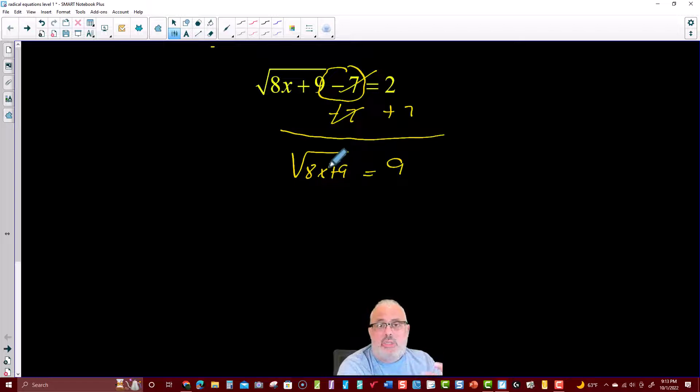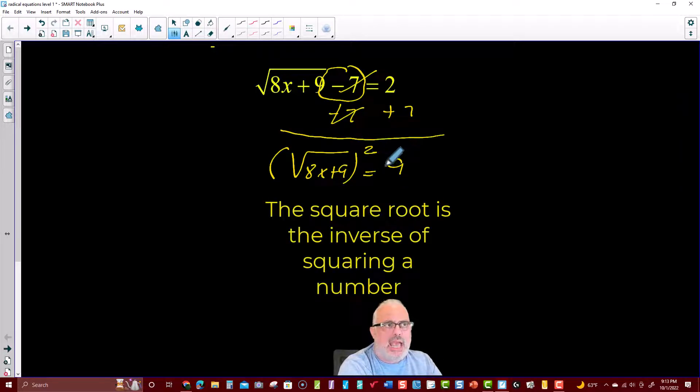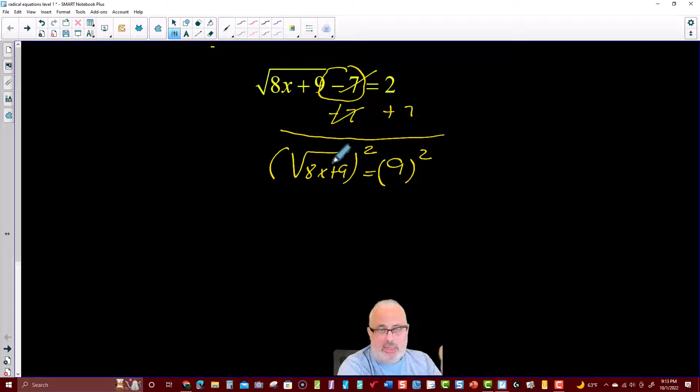So right now, because we need to use the inverse operation, because the inverse operation is the critical procedure to solve equations, in the same way that I add 7 to cancel minus 7, I need to square both sides, and that's going to undo the square root. So I raise to the second power both sides of the equation, and I can cancel these two with the radical, leaving me with 8x plus 9, and 9 to the second power is 81.